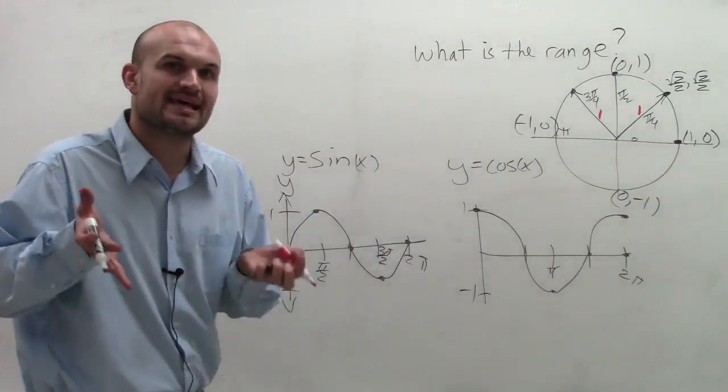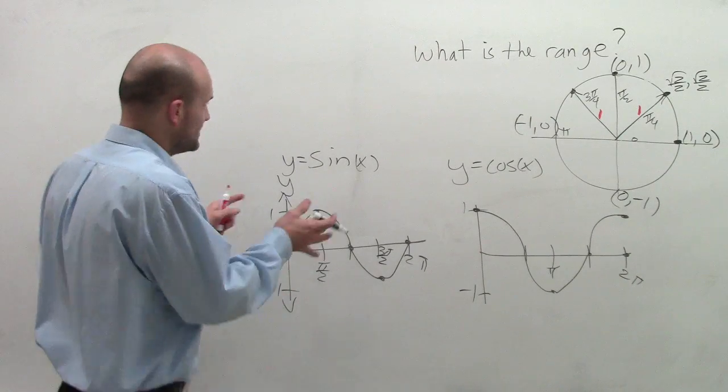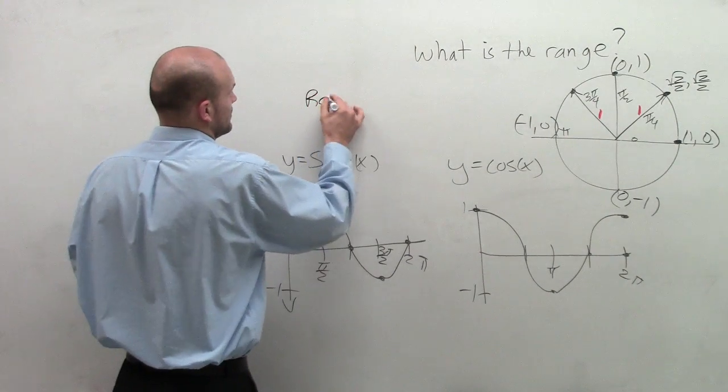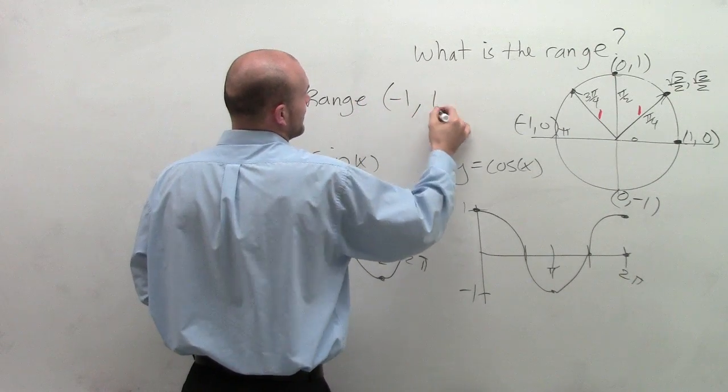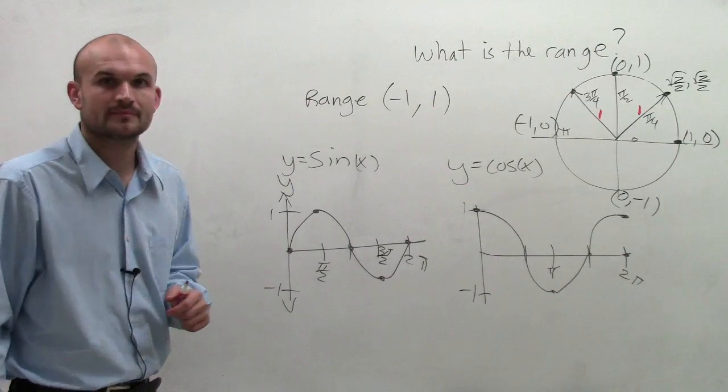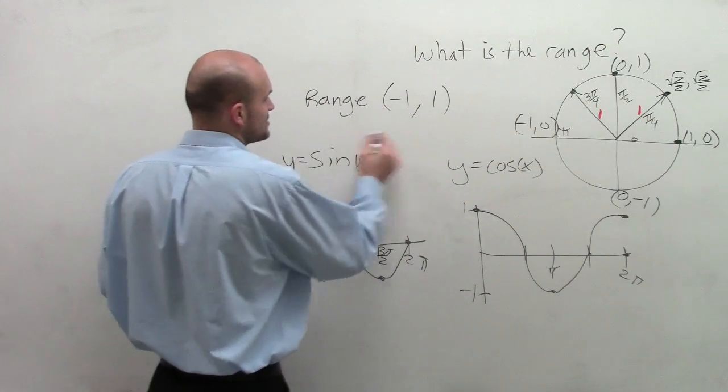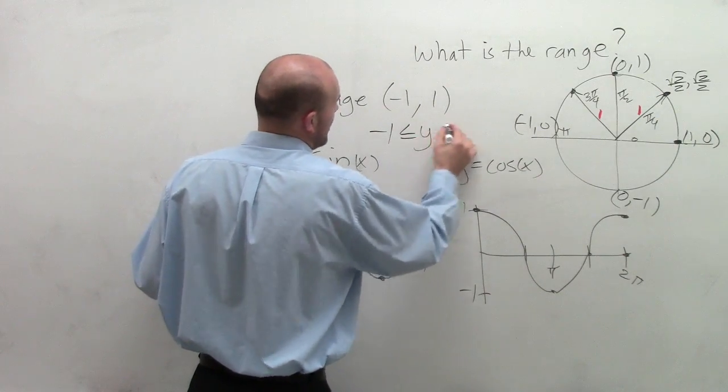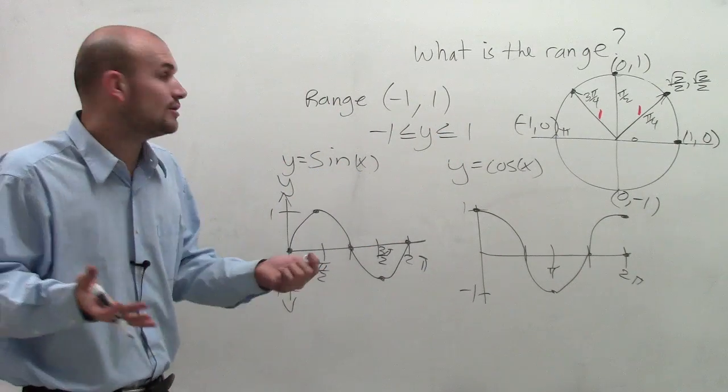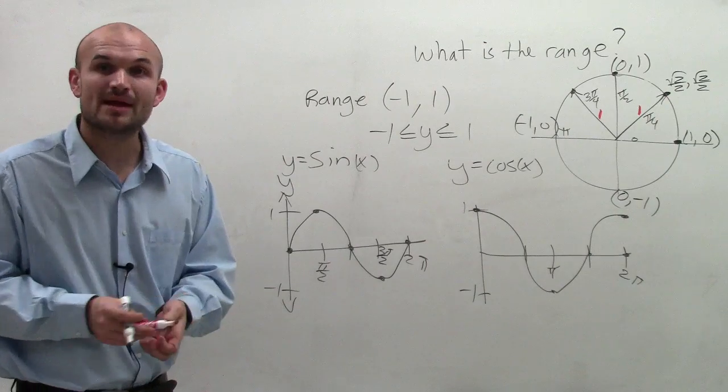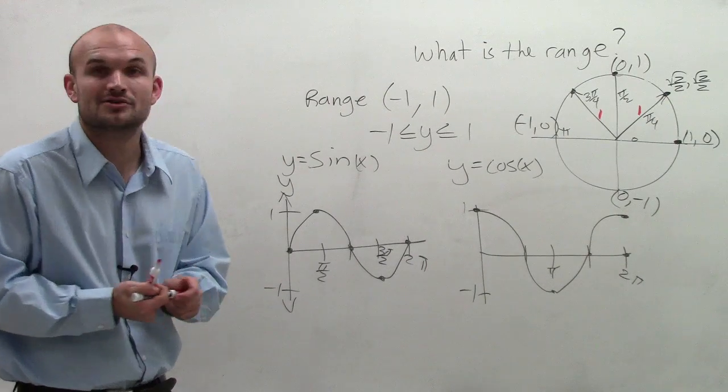Therefore, what we do is we say the range for these two functions is going to be contained between negative 1 and 1. Or we could also say negative 1 is less than or equal to y, which is less than or equal to 1. That is how you define the range of your sine and cosine graph.